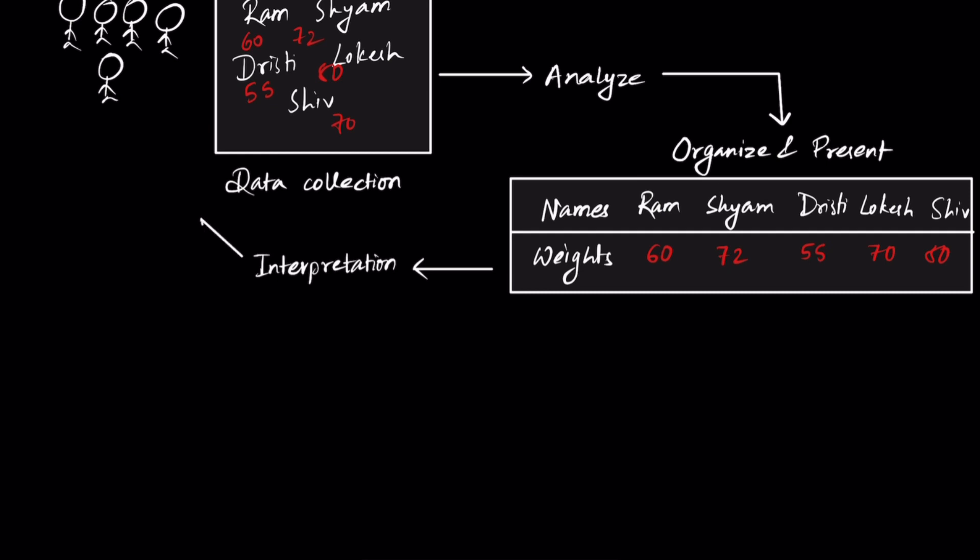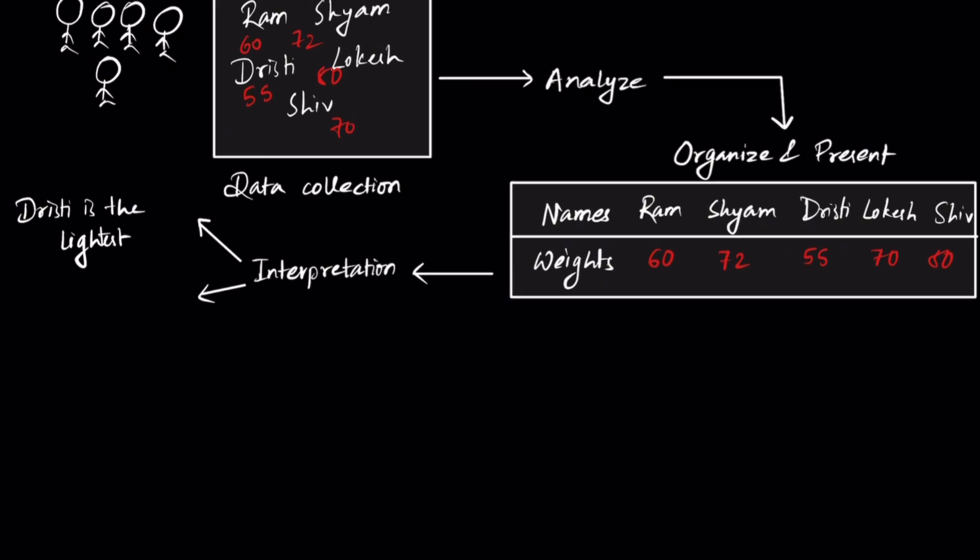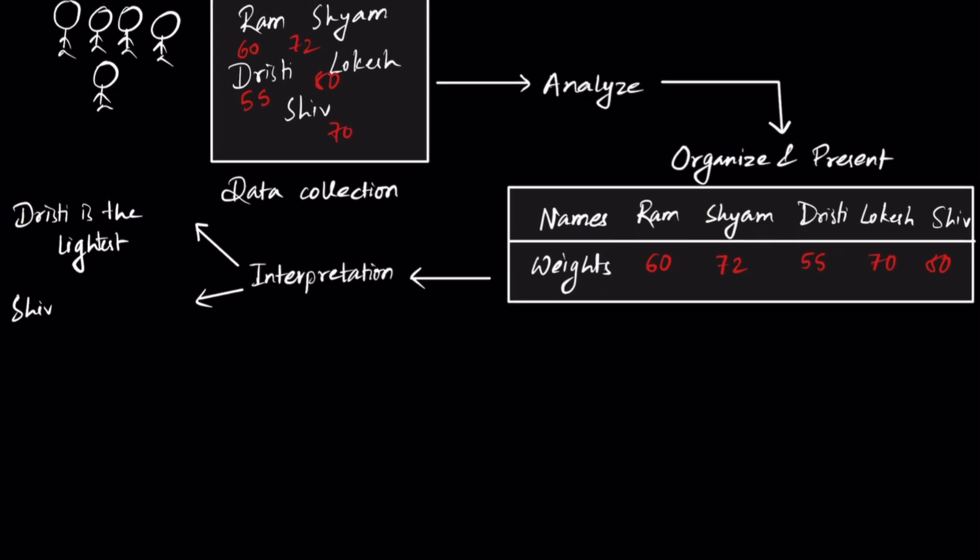Number one: out of all the students, Dristi is the lightest. Similarly, out of all the students, Shiv is the heaviest. If you compare the weight of Shyam and Lokesh, Shyam is heavier than Lokesh.